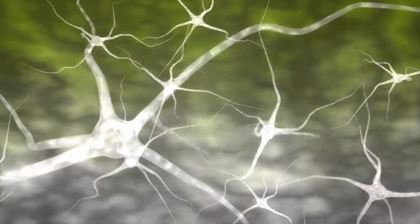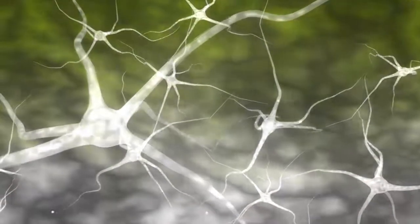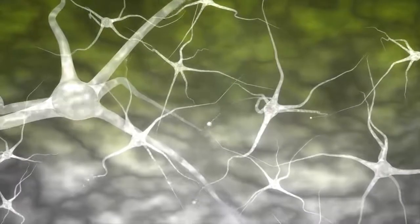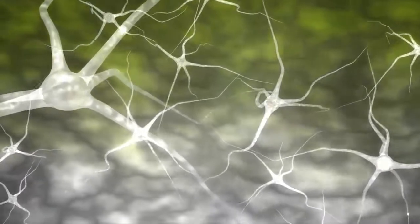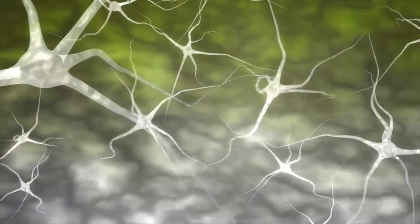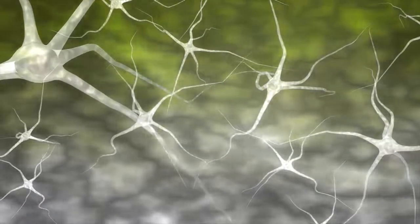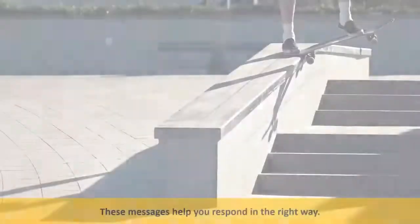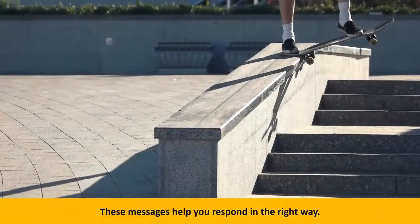The nervous system works with the help of nerve cells or neurons. They transmit or receive the messages between different parts of the nervous system. Neurons transmit the messages in the form of waves or signals called nerve impulses. These messages help you respond in the right way.